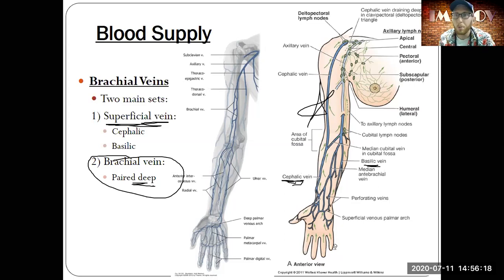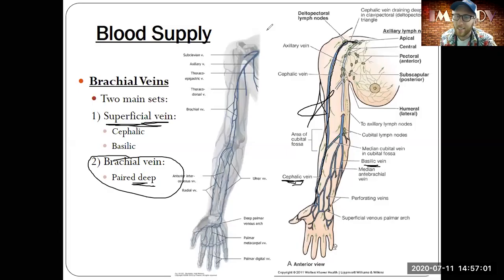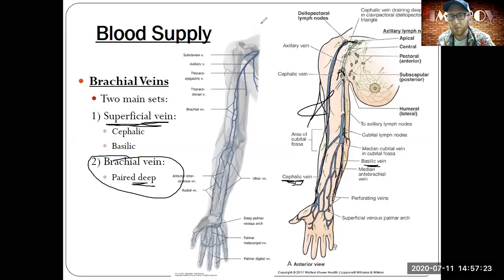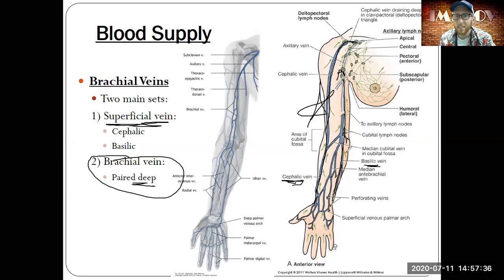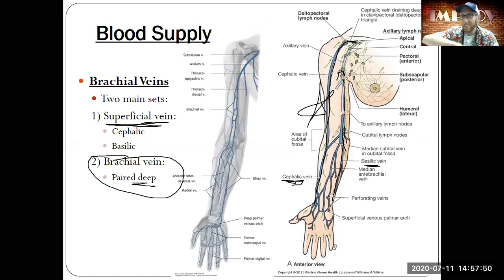The cephalic vein is like the superhighway, traveling all the way from the wrist up to the subclavian vein. The basilic is more medial and goes into the axillary vein, making it one step shorter. If you're giving blood, they will look for your median cubital vein, which connects the cephalic and basilic and runs right across the cubital fossa — the inside of your elbow. It's easy to get to for sticking a needle in and drawing blood.